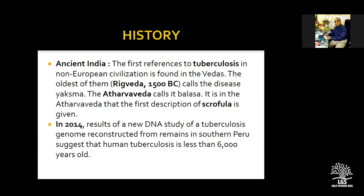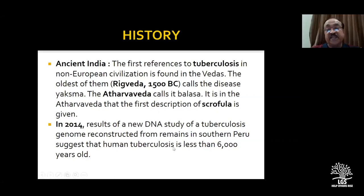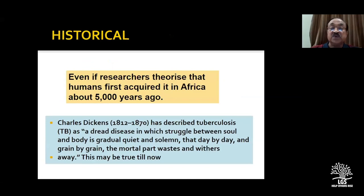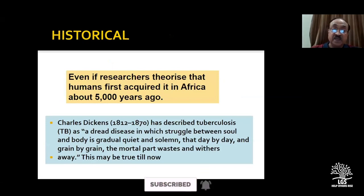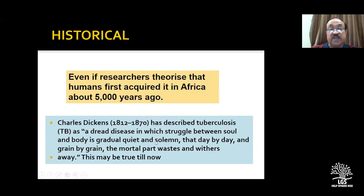A quick one or two slides on history. The reference to tuberculosis is found much earlier than European records — it's in the Vedas. Some mention it in the Rigveda as 'Yakshma,' and in the Atharvaveda it is called 'balsa.' The first descriptive account of scrofula has also been given in the Atharvaveda. A 2014 DNA study done in Peru found tuberculosis existing almost 6,000 years ago.